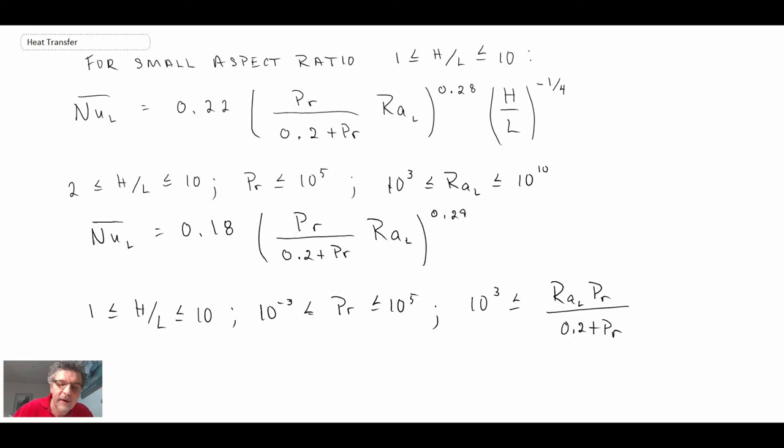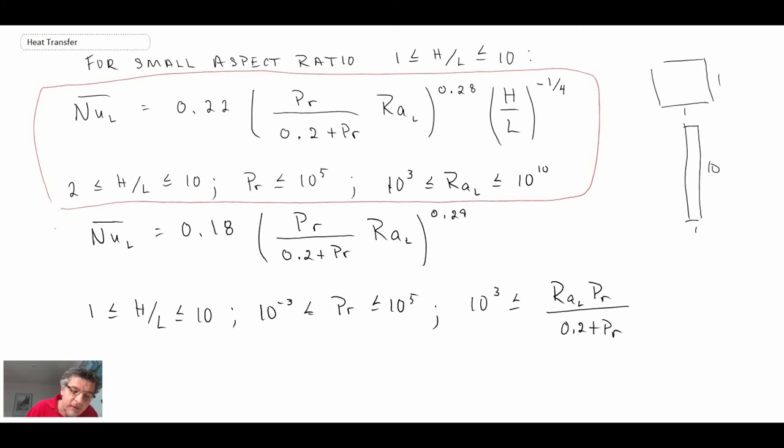So if you have small aspect ratio, so remember we said that that would be something like a square to something like that where this would be 10 times that. There it's 1 to 1. So if you have small aspect ratio, these are the different correlations that you use, and there's restrictions there in terms of the Prandtl number and the Grashof number.